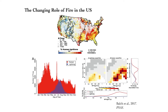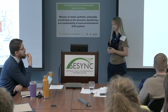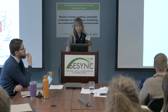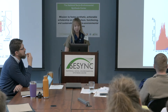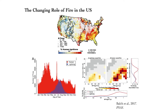Human-caused fires expand fires to areas with higher fuel moisture and higher NPP relative to lightning-caused fires. Human-caused fires are on the right, lightning-caused on the left, with fuel moisture on the Y and NPP on the X. We can see that human-caused fires occupy not only more niche space in that area, but also areas that have higher NPP and higher fuel moisture. Human-caused fires also extend the wildfire season, expanding our fire shoulder seasons.